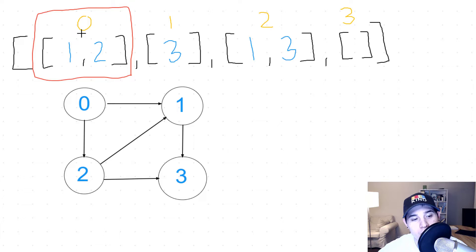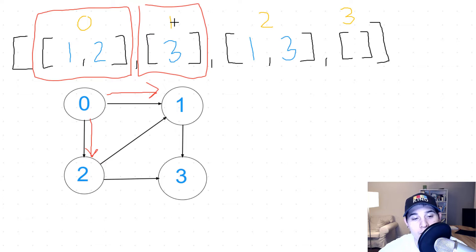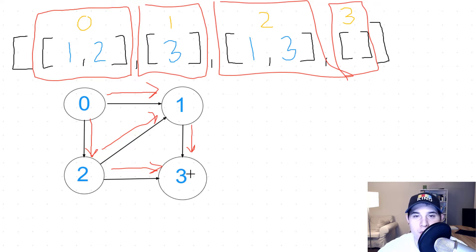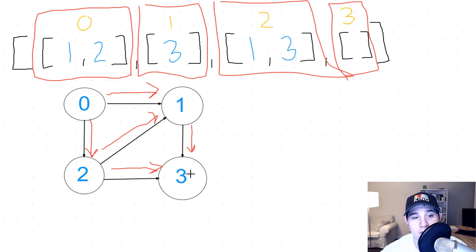The numbers inside each array are the destination nodes. So index 0 is connected to 1 and to 2. Index 1 is connected to 3. Index 2 is connected to 1 and to 3. And finally we have an empty array — node 3 does not have any connections. This is important to understand because we need to know how we can extract the neighbors or connections from our nodes.